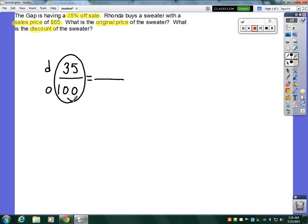I don't like working with numbers that are this large, 3,500. So I'm going to scale this fraction down by dividing the numerator and denominator by 5. 35 divided by 5 is 7. 100 divided by 5 is 20. So now the discount to the original is 7 to 20.